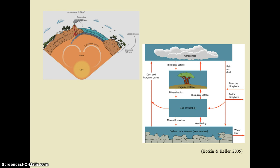The rate at which nutrients cycle is strongly affected by the rates at which decomposers work. In the tropics, warmer temperatures and abundant moisture cause organic material to decompose two to three times faster than it does in temperate regions.